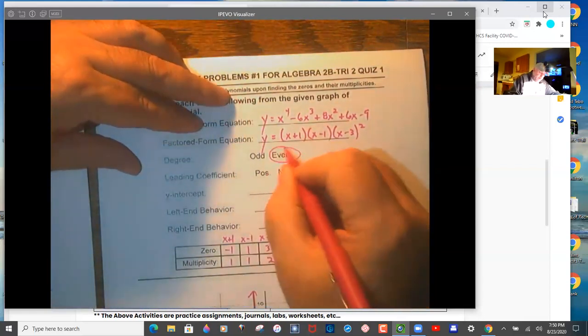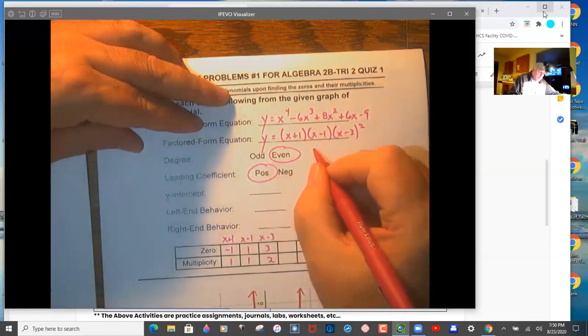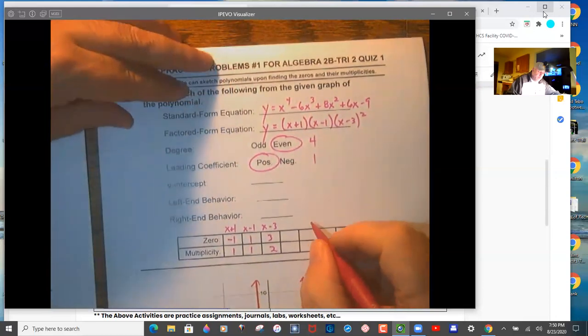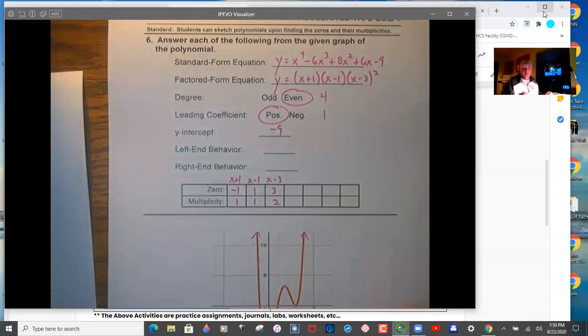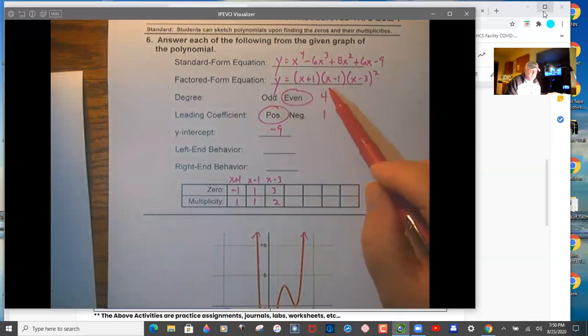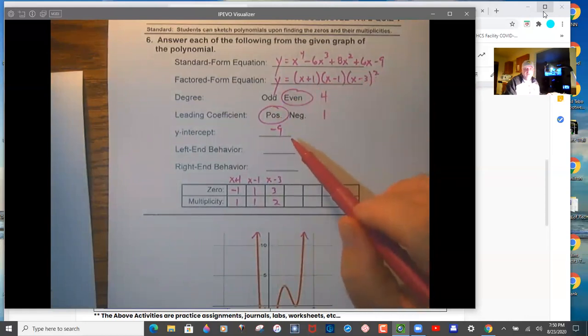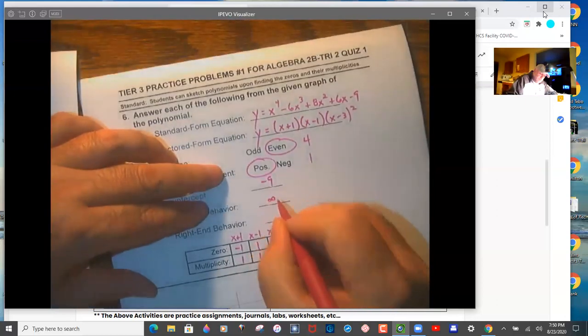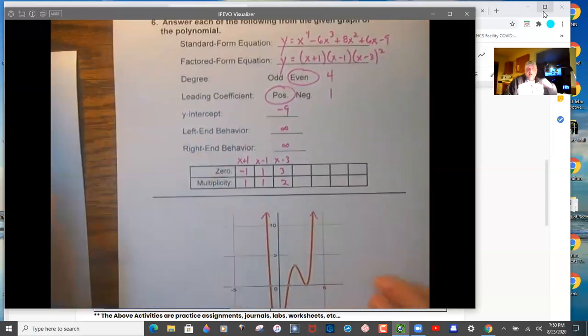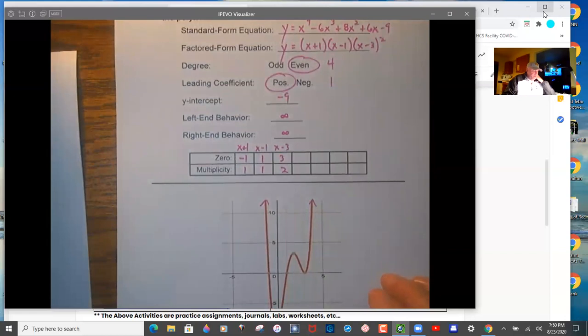So we have an even positive. Okay, the degree is four, the leading coefficient is one. Y-intercept is negative nine. So once you can get the expanded form there and do what I've shown you in the past. To get, you know, one times one times one squared is one. And then for negative nine, one times negative one times negative three squared is negative nine. Left end behavior. You can tell this by looking at the graph. They're both positive infinities. All right. And that will do that problem.